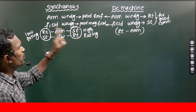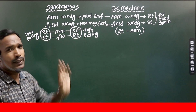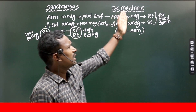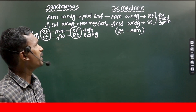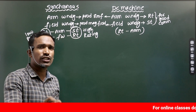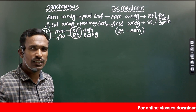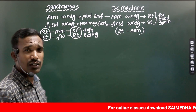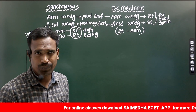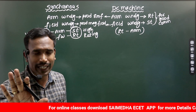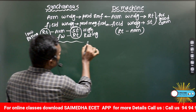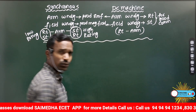This is the first major difference between them. Practically, DC machine has a rotating armature and the synchronous machine has a stationary armature. The advantages of stationary armature will be discussed in the next video.